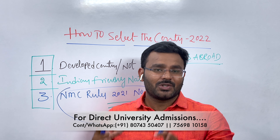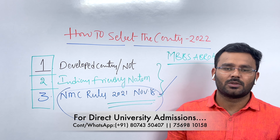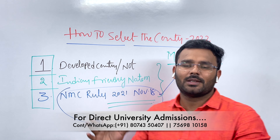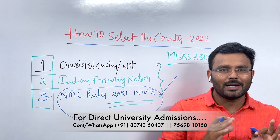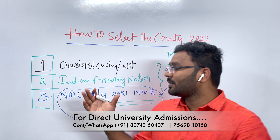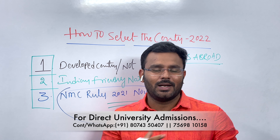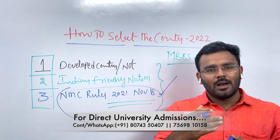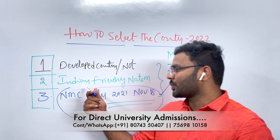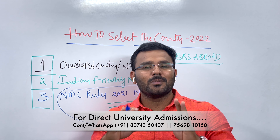Why should we select Russia? There are three most important points. First, we should select a developed country, not an undeveloped one. Second, regarding economic and political situations, we should select a country based on bilateral relations — a friendly country. If we do not select a friendly country, NMC rules may not be followed.